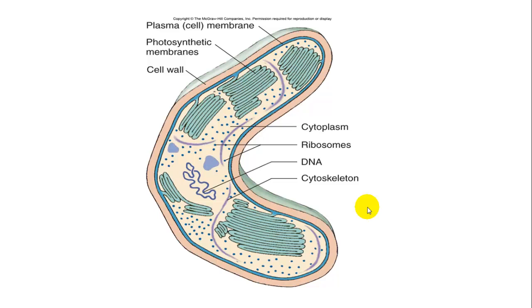Here's an example of a prokaryotic photosynthetic bacteria. It's one cell. It has a cell membrane and a cell wall, a photosynthetic membrane used for photosynthesis containing chlorophyll, a gooey fluid-like substance called cytoplasm, ribosomes where proteins are made, one circular form of DNA, and structural elements called the cytoskeleton.